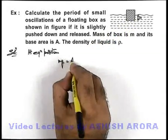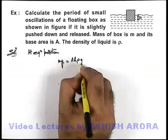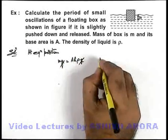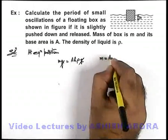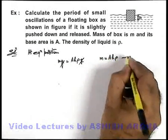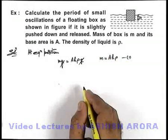So we can write the buoyancy force to be Ahρg. Here g gets cancelled out and we are getting the mass of block as Ahρ. Say this is our equation 1 at equilibrium.